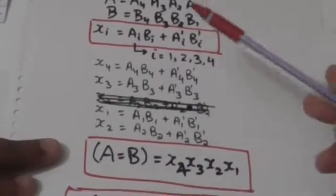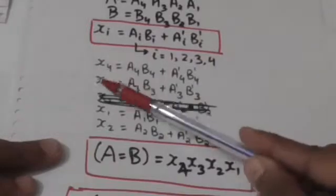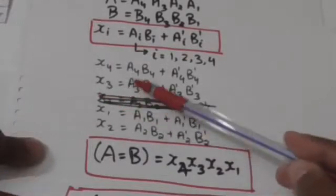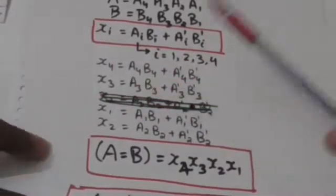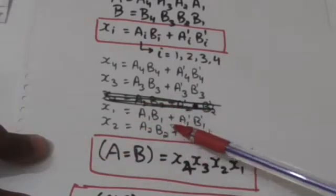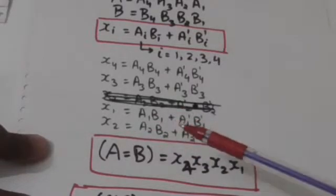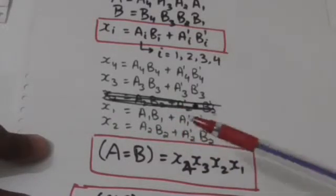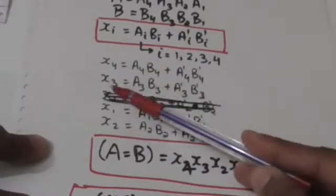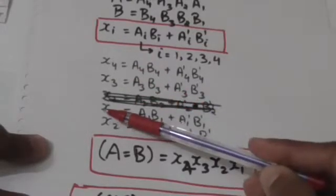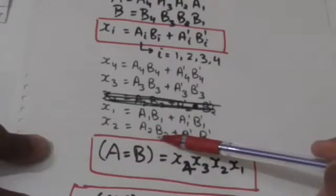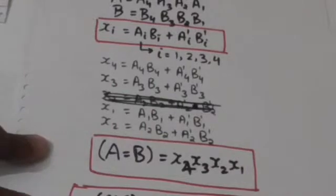So X4 is an equivalence function of A4 and B4, X3 is an equivalence function of A3 and B3, X2 is an equivalence function of A2 and B2, and X1 is an equivalence function of A1 and B1. X4 equals 1 when A4 equals B4, X3 equals 1 when A3 equals B3, X2 equals 1 when A2 equals B2, and X1 equals 1 when A1 equals B1.